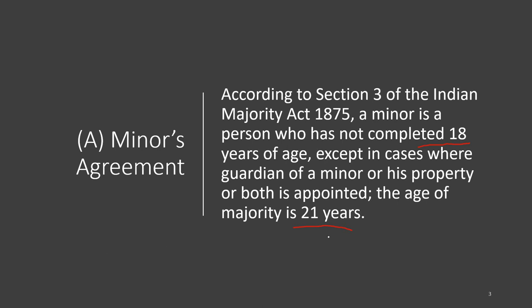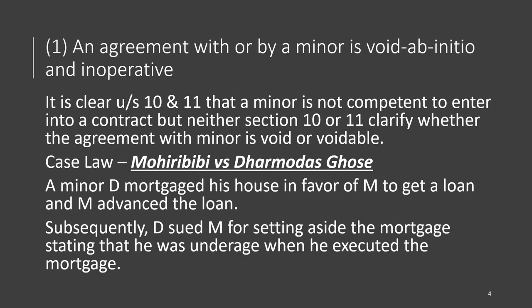When we say age of majority, generally we mean 18, but in certain cases it is 21 — that we need to remember. Now, what are the provisions related to minors' agreements? First, an agreement with or by a minor is void ab initio. Void ab initio means void from the very beginning — 'initio' means the initial stage itself. Any agreement with a minor is void ab initio.